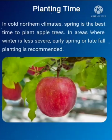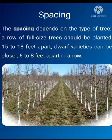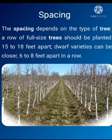Planting time. In cold northern climates, spring is the best time to plant apple trees. In areas where winter is less severe, early spring or late fall planting is recommended. Spacing depends on the type of the tree. A row of full-sized trees should be planted 15 to 18 feet apart. The dwarf varieties can be closer, that is 6 to 8 feet apart in a row.